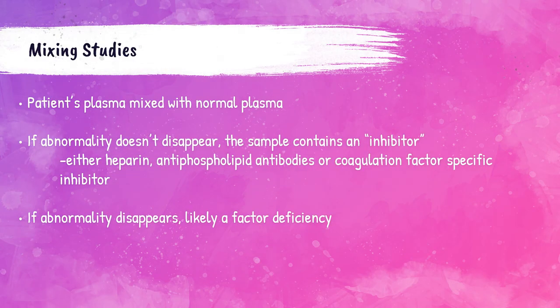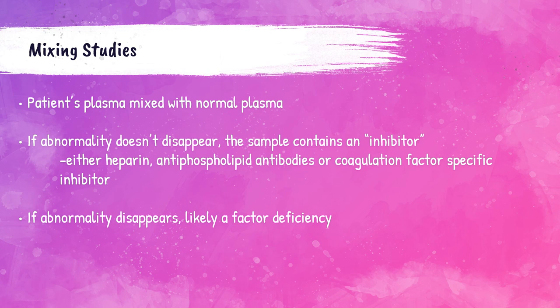Mixing studies are performed in the coagulation department when a patient has a prolonged PT or PTT. The patient's plasma is mixed with a normal plasma sample, and the PT or APTT is run again. If the patient is deficient in a coagulation factor, the normal plasma will supply normal amounts of that factor and the result will correct to normal. If the PT or APTT does not correct and remains abnormally prolonged, the patient likely has a coagulation factor-specific inhibitor. Mixing studies are used to distinguish between a factor deficiency and a factor inhibitor.